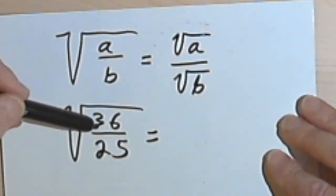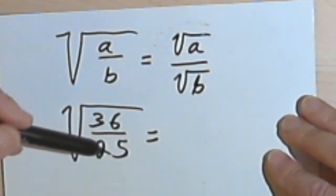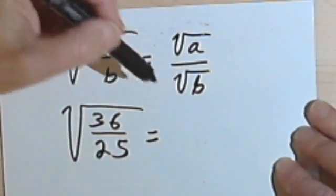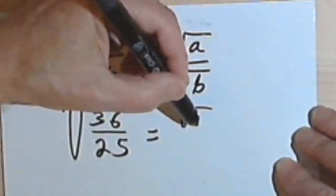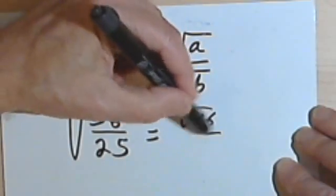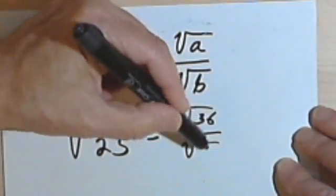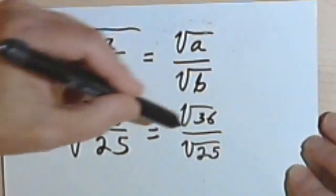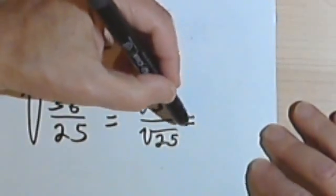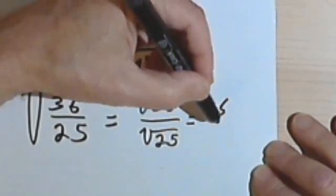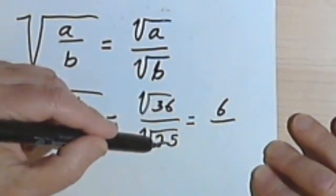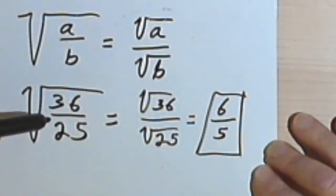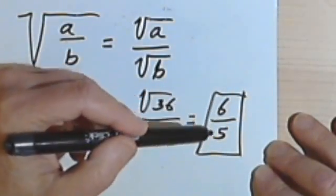We have the square root of 36 divided by 25. Dividing 36 by 25 is not going to be helpful. However, we can think of this as the square root of 36 over the square root of 25. Now I can take the square root of 36, which gives me 6, and the square root of 25 gives me 5. So my answer to this problem is going to be 6 over 5.